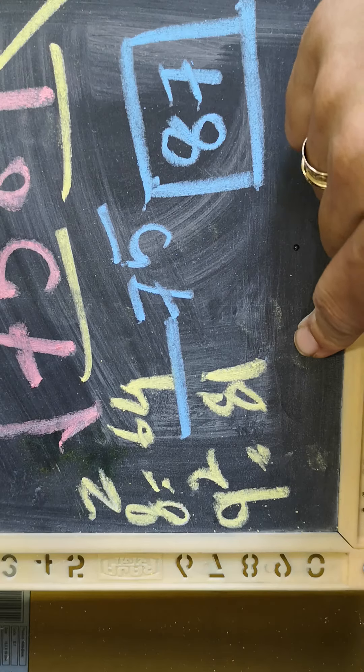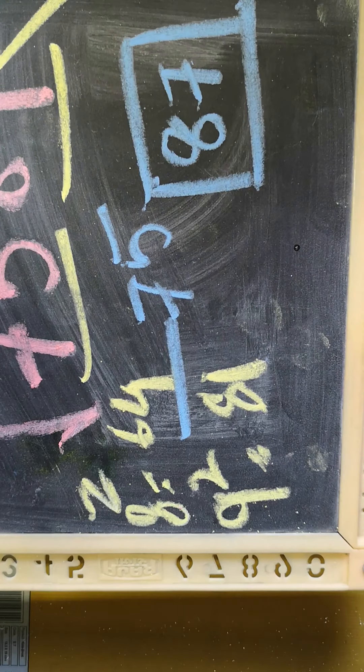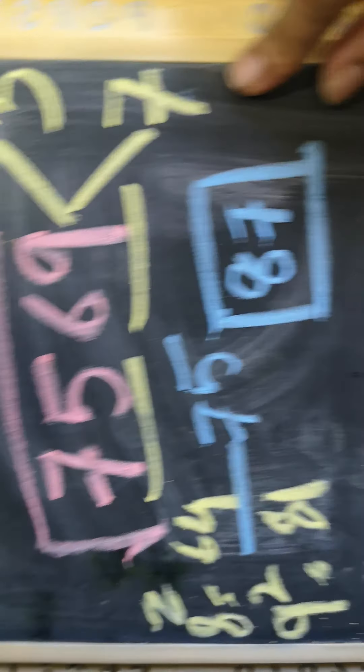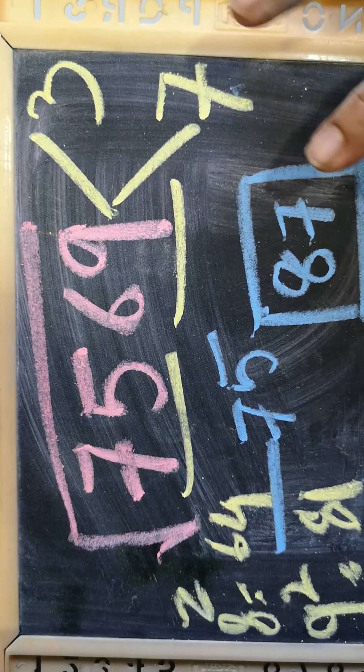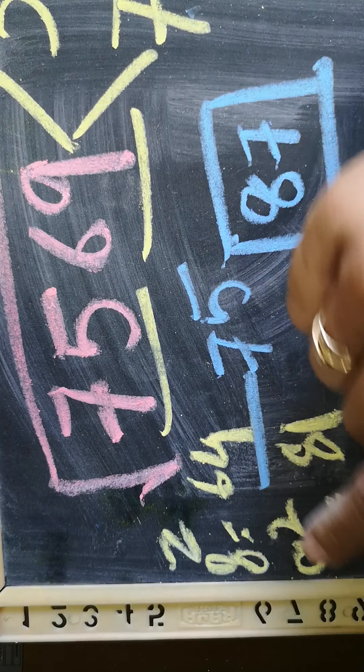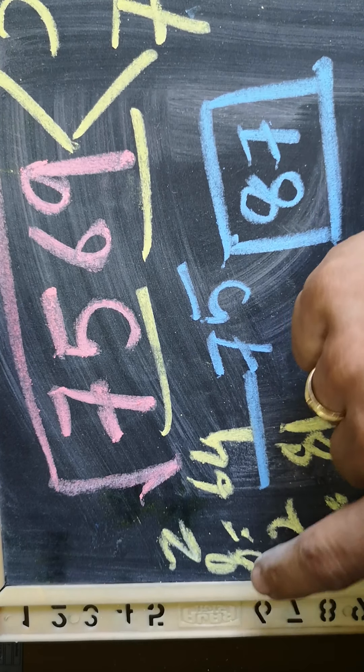So let us consider 81. So 81 will give you the answer 3 or 7. So 7 is the second digit, the unit digit, and the first tens digit is going to be 8.